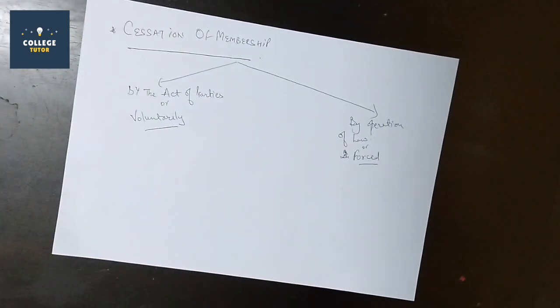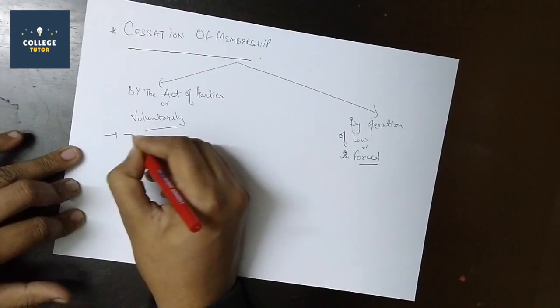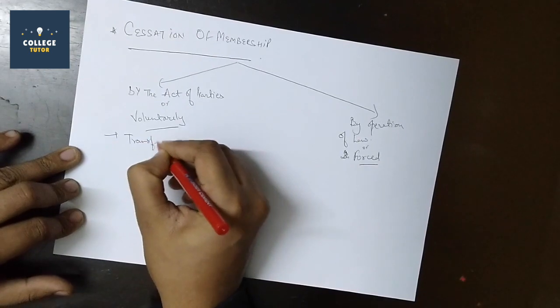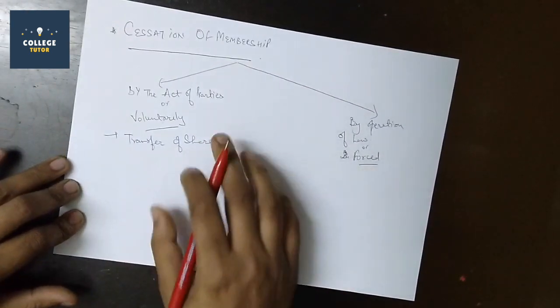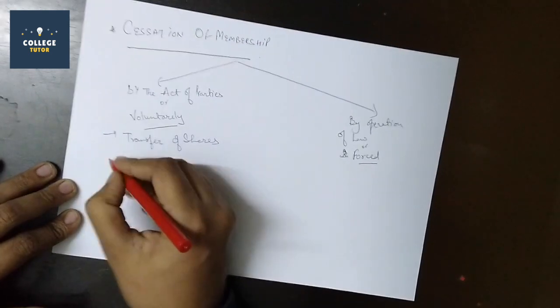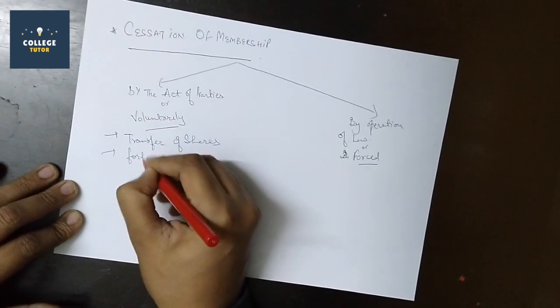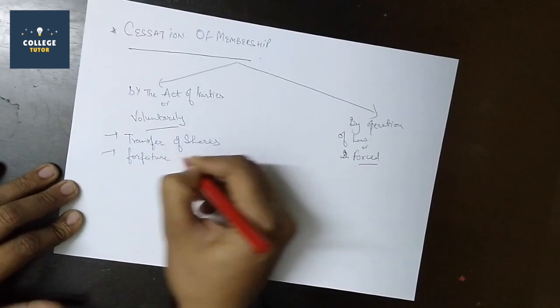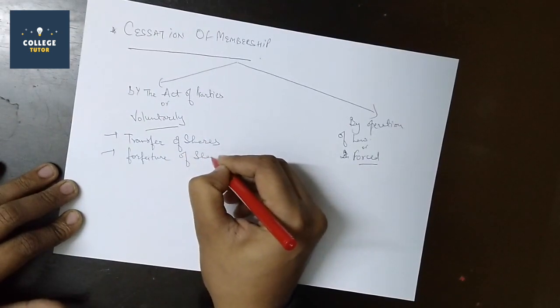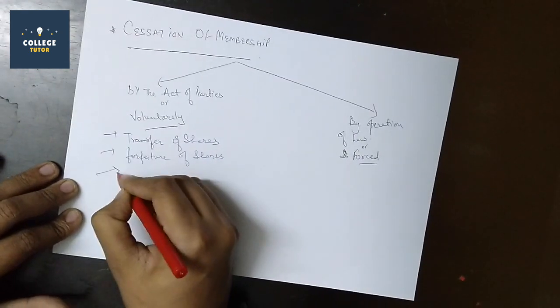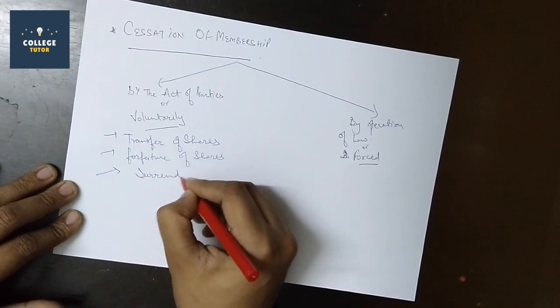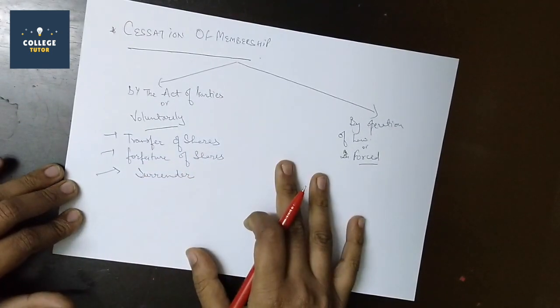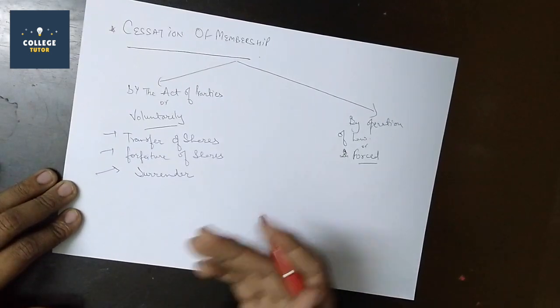Let's discuss the voluntary methods first. Transfer of shares - if I have transferred shares to another person, then my membership ends. Features of shares include that shares and membership are connected. Third is surrender of shares - I have given the shares back to the company.